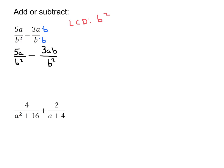Now after we do that, we're going to combine our numerators. So we're going to have 5a minus 3ab over b squared. Now that we've combined these, we're going to look at the numerator and see — can we factor anything out?